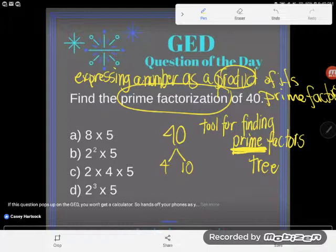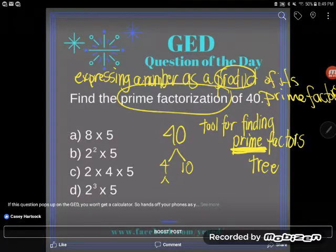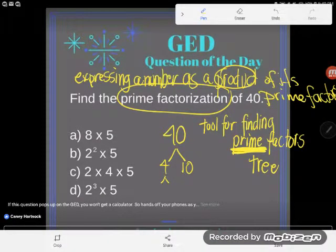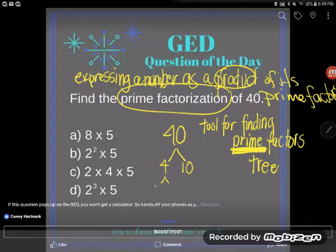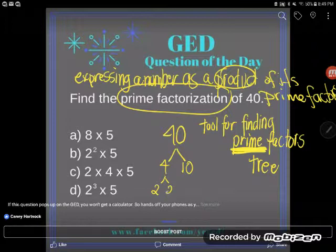Again, you can start with any multiplication fact you want. The key here is just to keep going until you come to prime factors. So is 4 prime? Of course it's not, it's an even number larger than 2. I can break it down. It is still divisible by 2. So 2 times what is 4? 2 times 2 is 4.